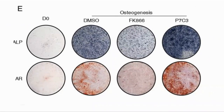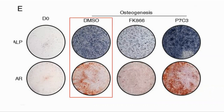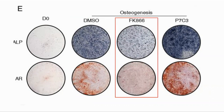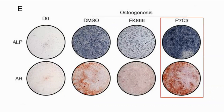They next looked at the impact of changing levels of NAD in the cells by either inhibiting or promoting NAMPT. This shows stain images where the blue in the top line and the red in the bottom line are bone cells. DMSO is the neutral control. FK866 is a NAMPT inhibitor, which significantly lowered the number of bone cells. And P7C3 is a NAMPT promoter, where we can see more bone cells being formed — showing a correlation between NAD levels and bone formation.